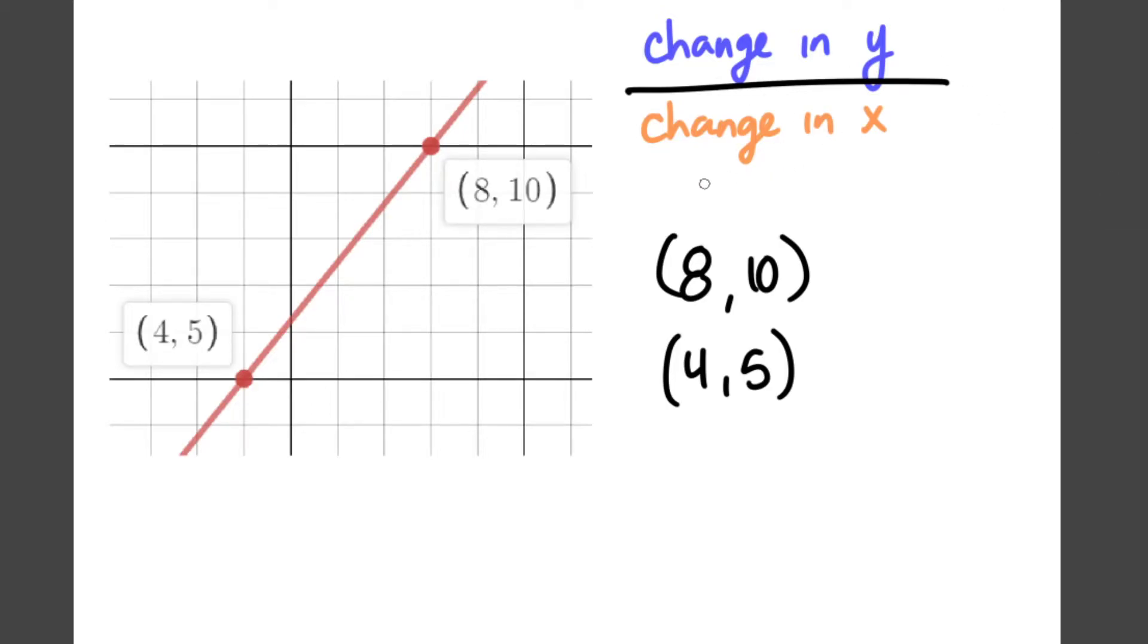Once again, my x values are going to be the ones on the left. So that's going to be my 8 and my 4. And my y values are going to be the ones on the right. So that's my 10 and my 5. So I'm going to look at how much did my y value change by from 5 to 10. How much did it add or subtract? It grew by 5. 5 plus 5 gives me 10. And how much did my x value change by? We went from 4 up to 8. So it grew by 4. We added 4.